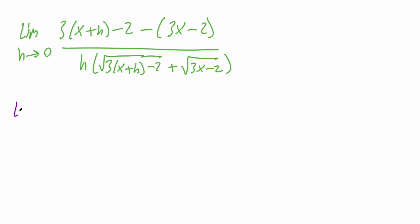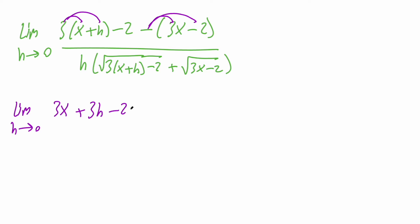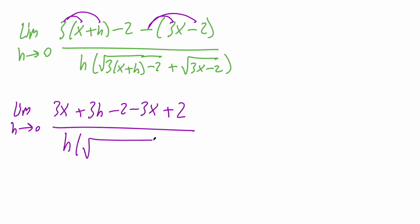At this point we're cleaning up again. We have the limit as h approaches zero. Using the distributive property: three times x is three x, three times h is three h, and we have negative two. Then for the second piece, we get negative three x, and a negative times a negative is positive two. The whole thing is divided by h times the square root of three(x plus h) minus two, plus the square root of three x minus two.